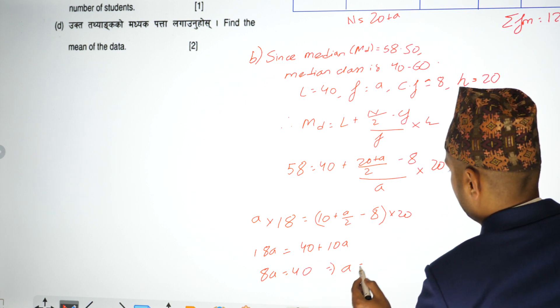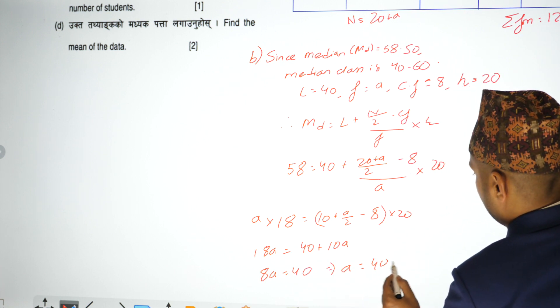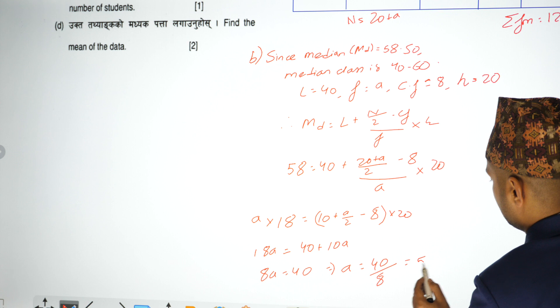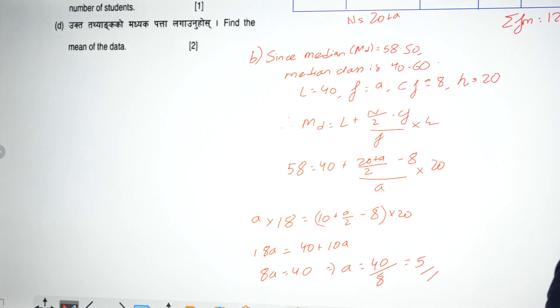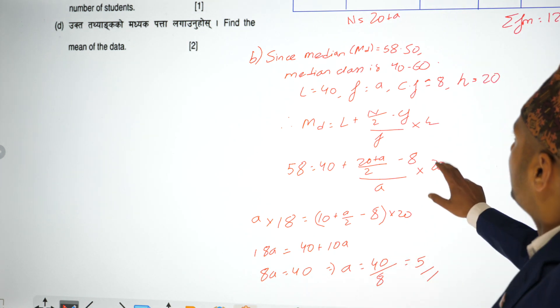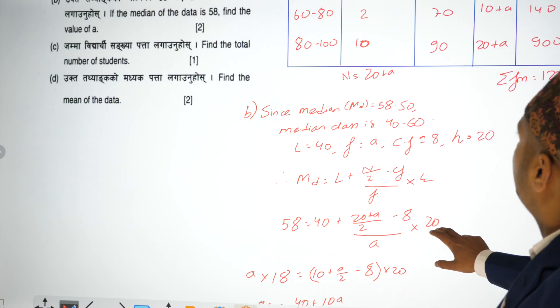This means A value is 40 by 8. How much is that? A value is 5.